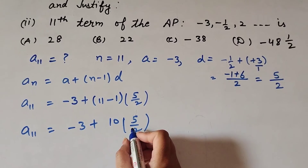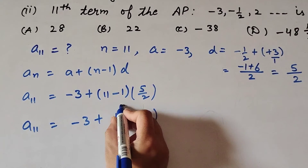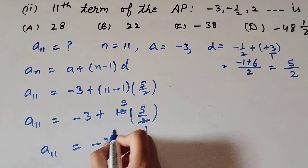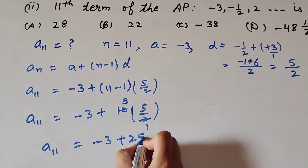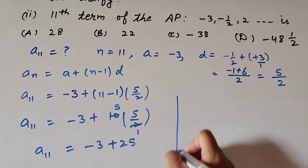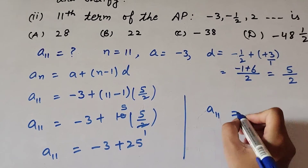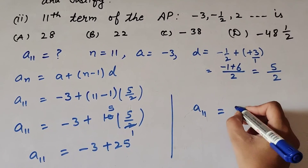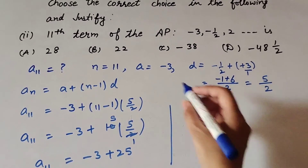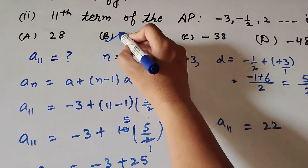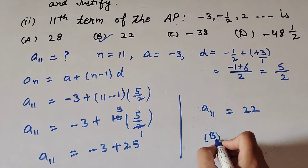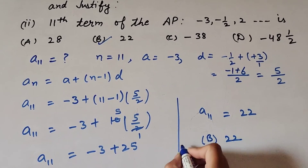Simplifying: 10 divided by 2 gives 5, and 5 multiplied by 5 is 25. So a₁₁ = −3 + 25, which equals 22. The 11th term of the AP is 22, so option B is the correct answer.